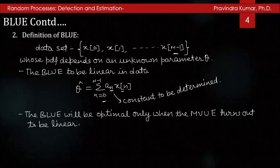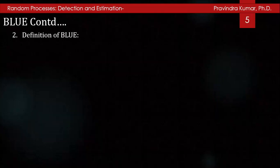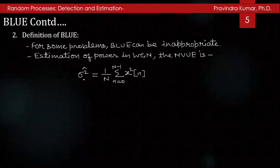The BLUE will be optimal only when the MVUE estimator turns out to be linear. For example, in estimating the value of a DC level in white Gaussian noise, the MVUE is the sample mean: θ̂ = x̄ = (1/N) Σ(n=0 to N-1) x[n], which is linear in data. For some estimation problems, the use of BLUE can be totally inappropriate — for instance, estimation of the power in white Gaussian noise: σ̂² = (1/N) Σ(n=0 to N-1) x²[n], which is non-linear in data.